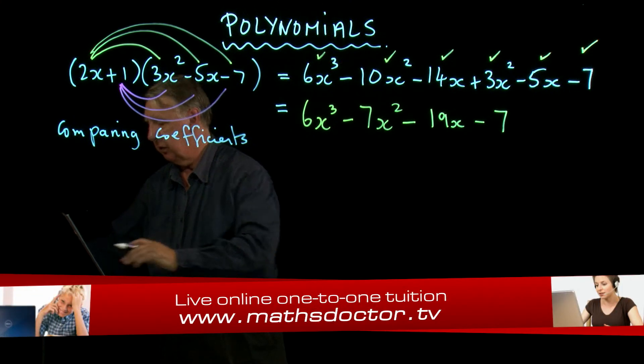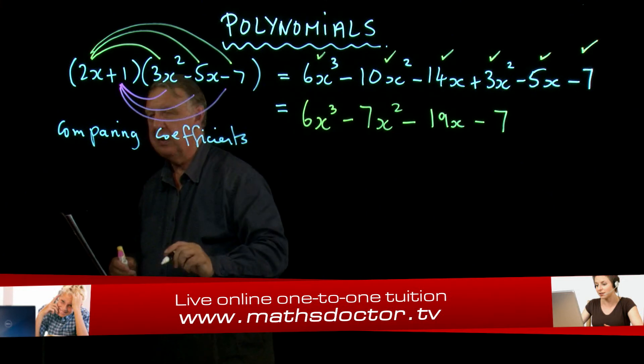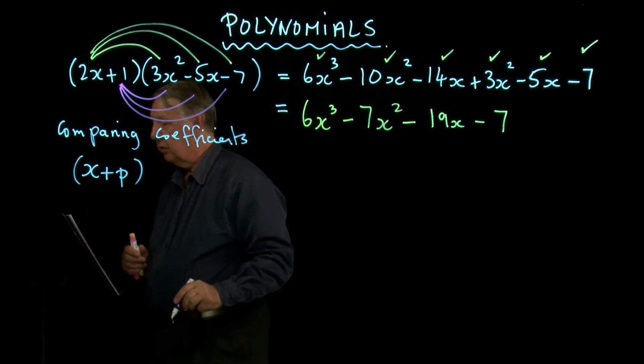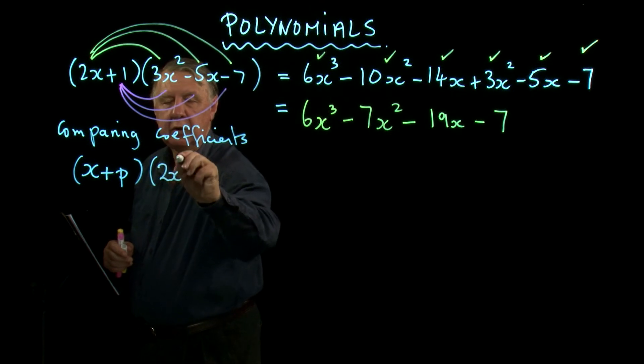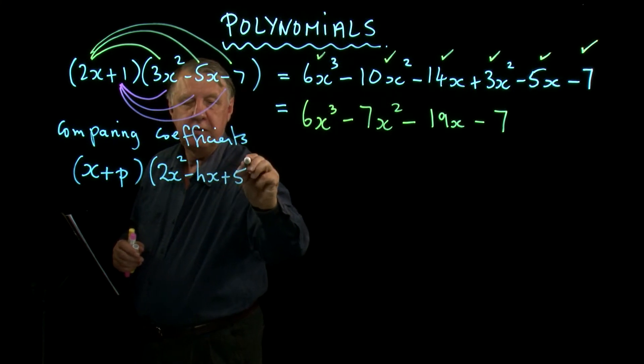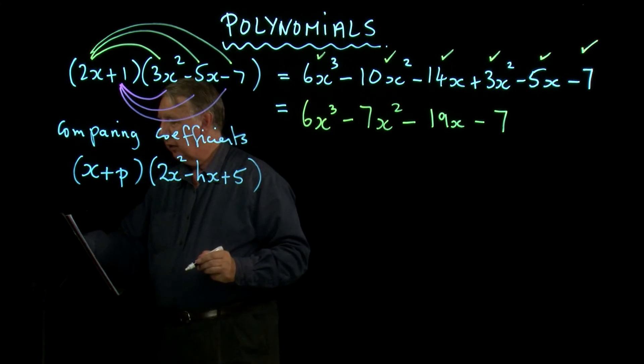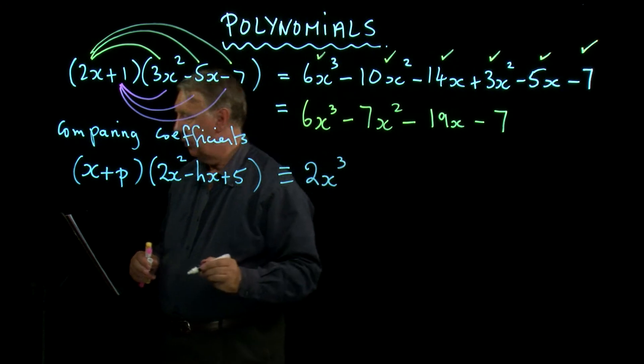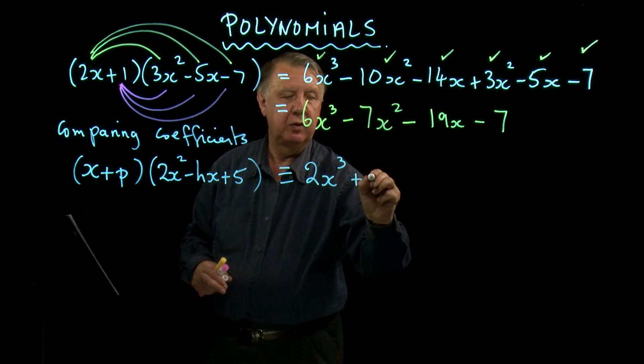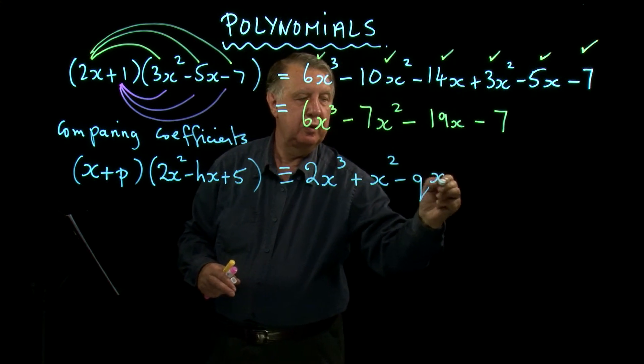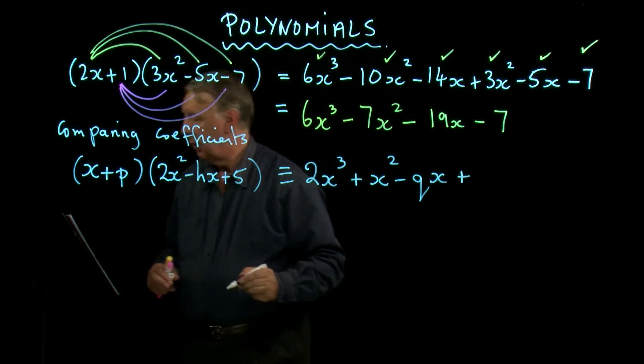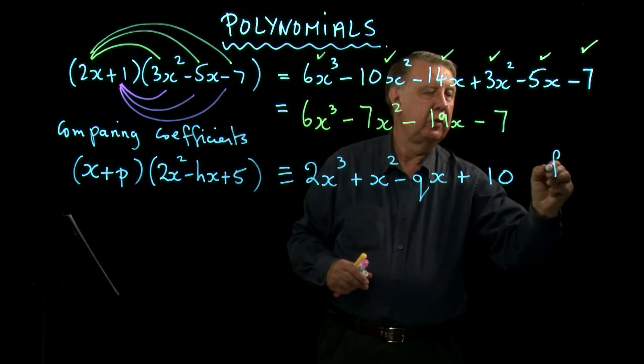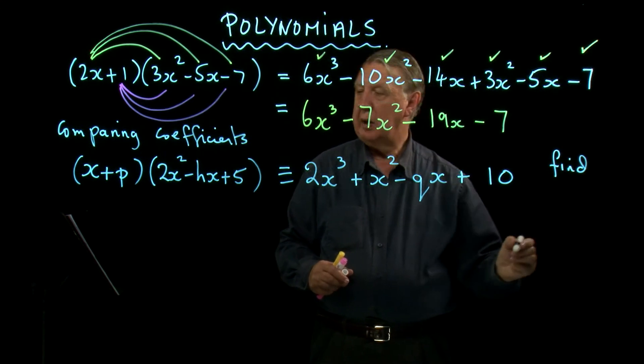So let's have a look at a question like this. I need to be careful how I copy this down. So we have (x+p)(2x²-hx+5) ≡ 2x³+x²-qx+10. Find p, q and h.